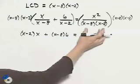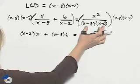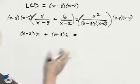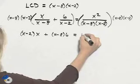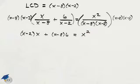On the right-hand side, we notice that we will be able to divide out the x minus 8 times x minus 2, so we're simply left with an x squared.